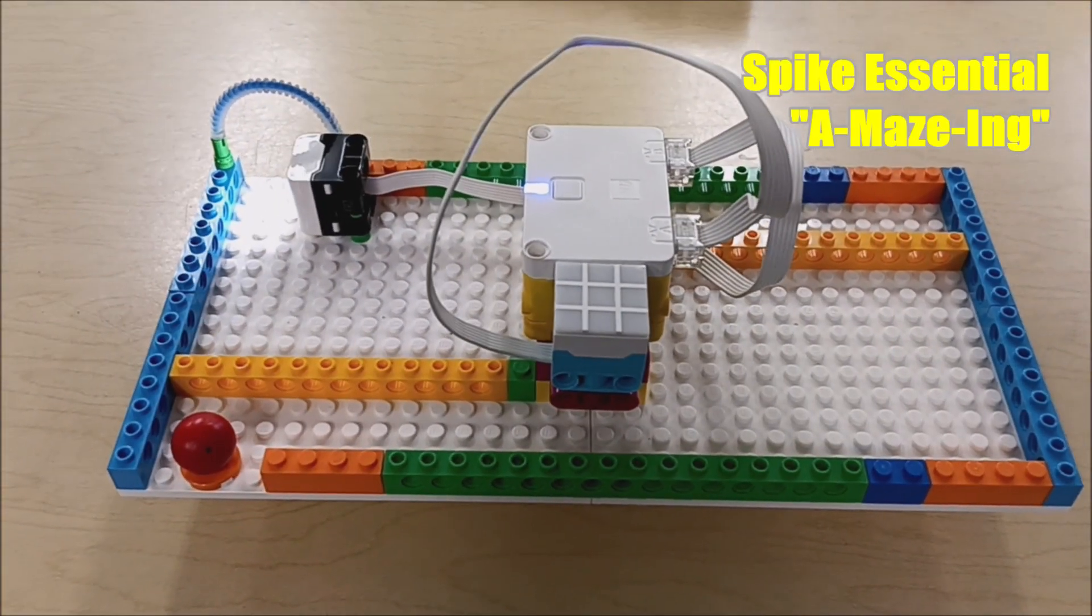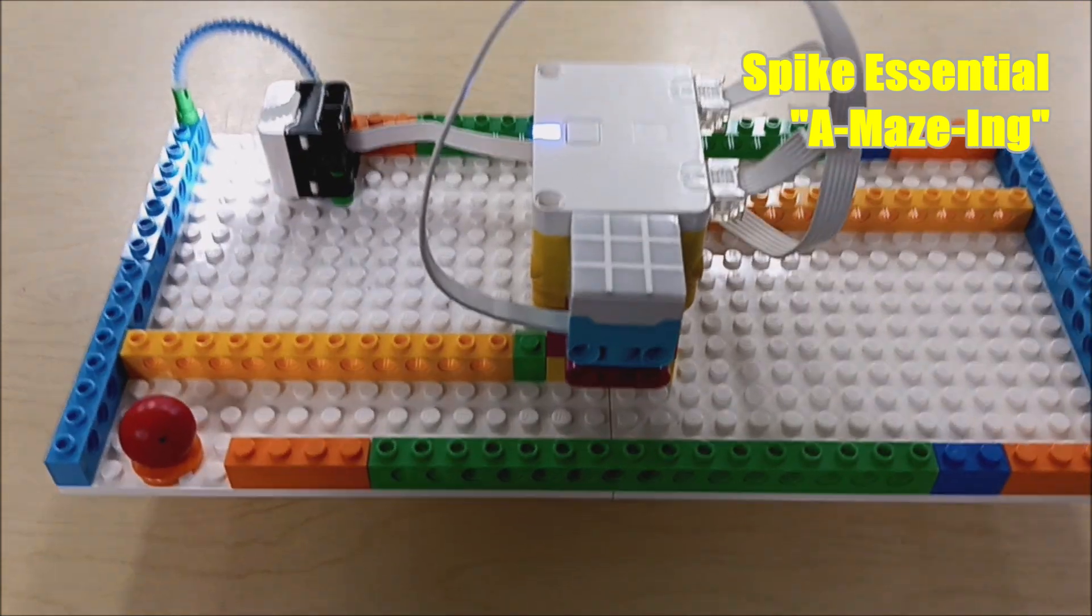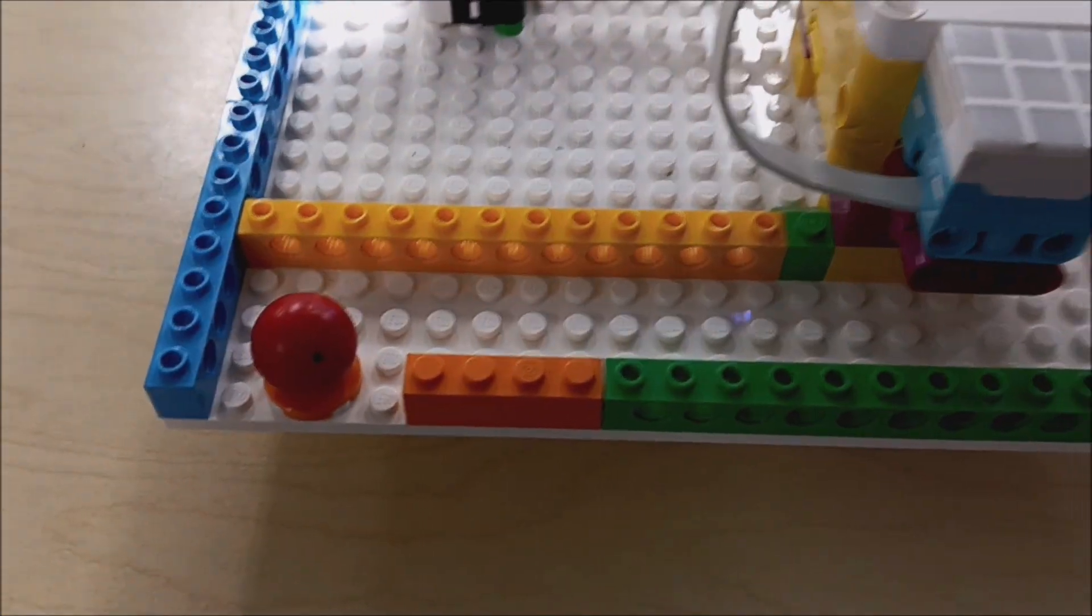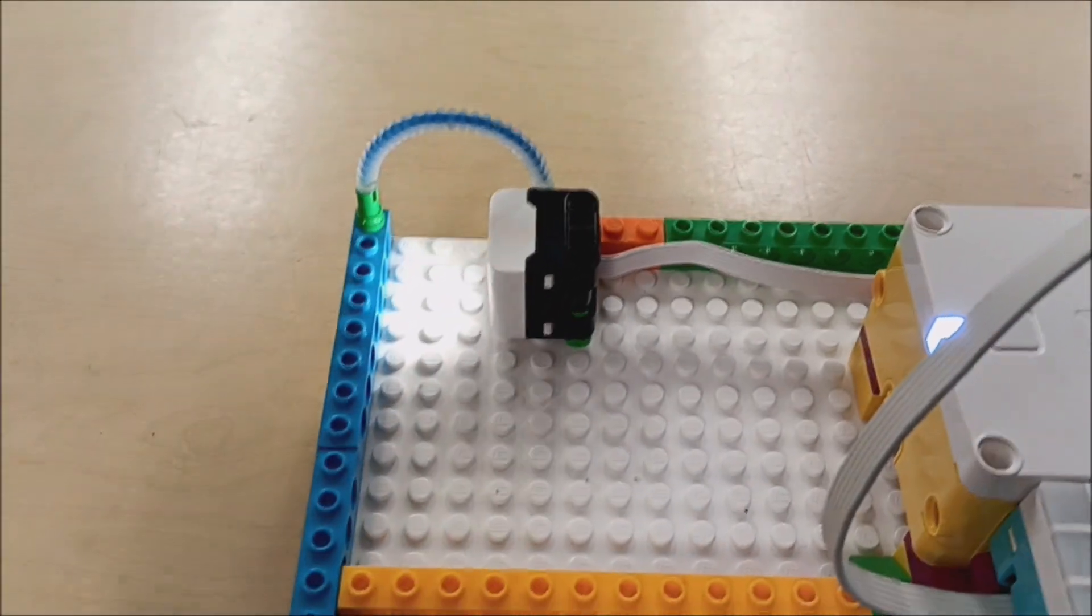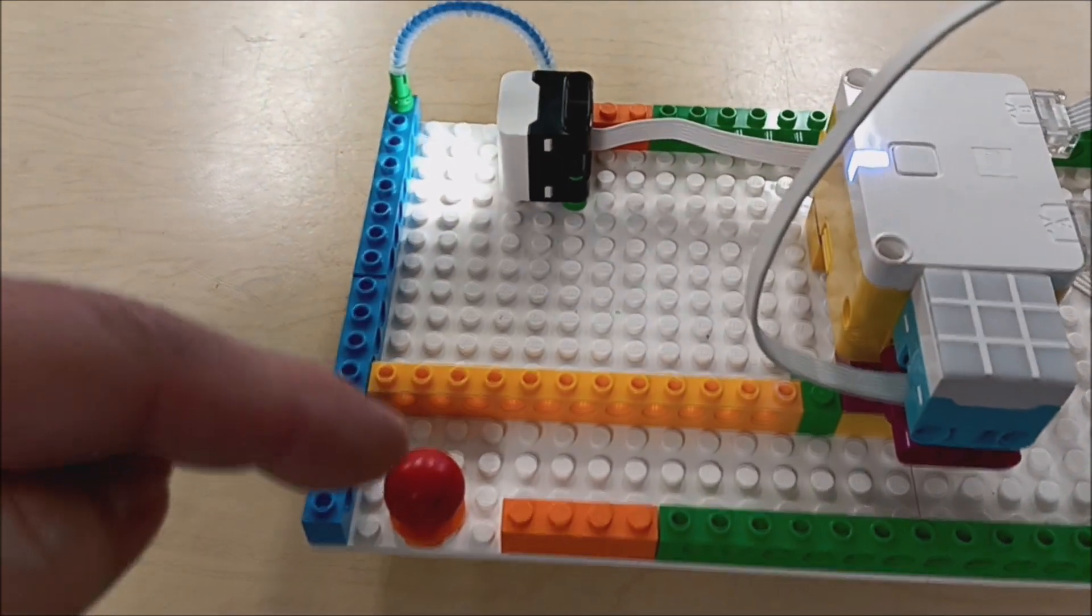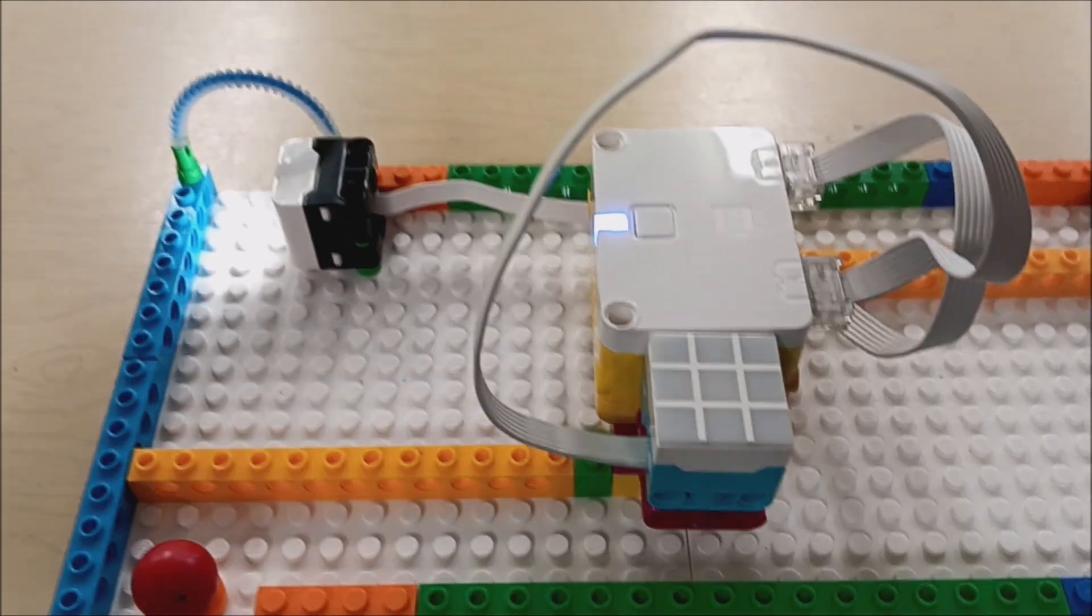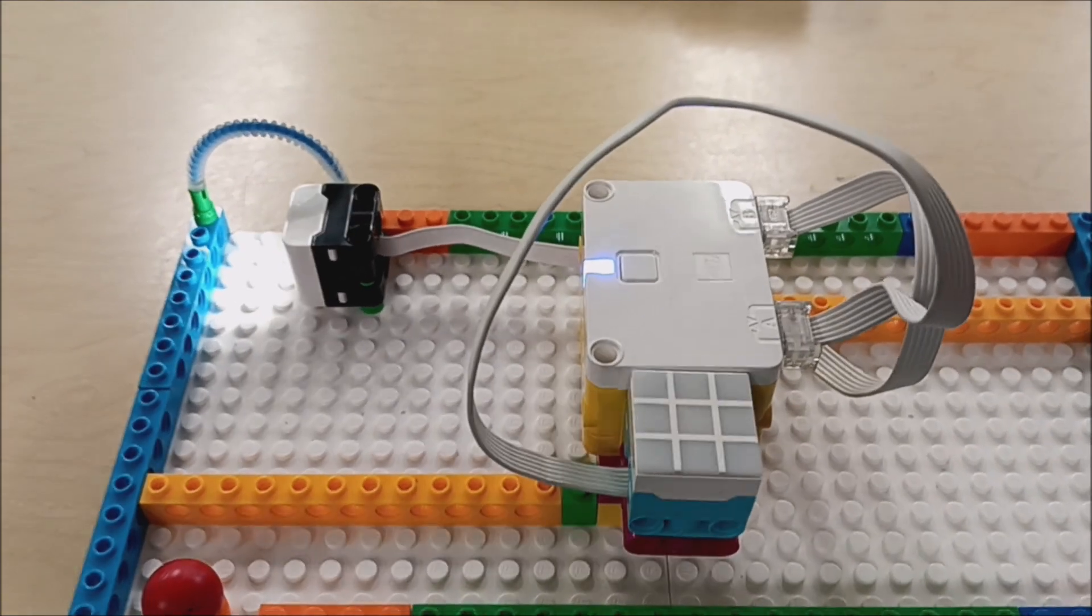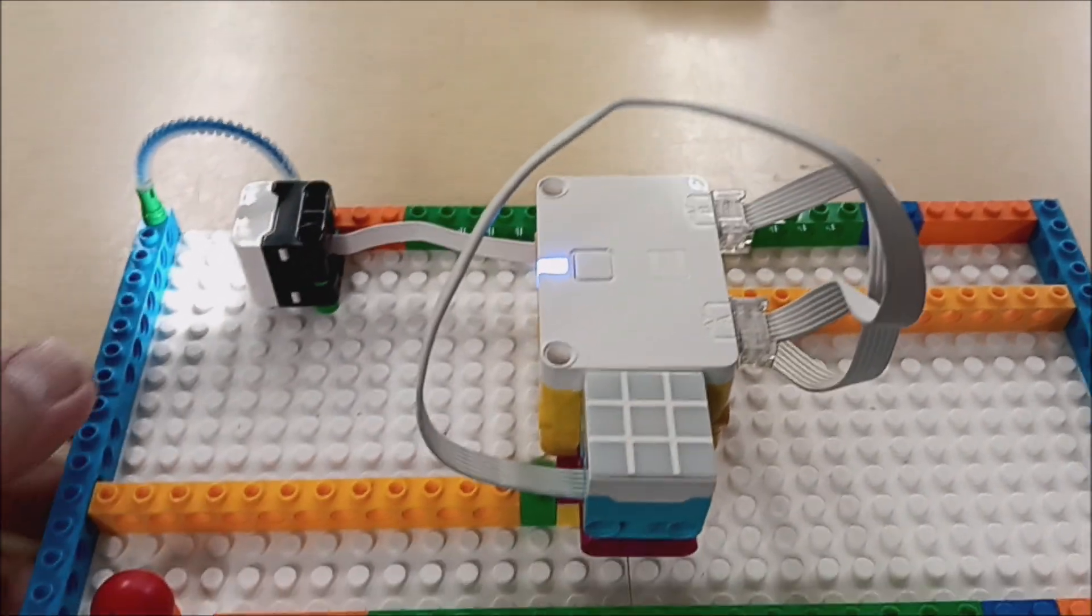Okay, so here is the Spike Essential Amazing Build. There's no motor involved, so you're just going to have to use your hands to get this ball to go through the maze and out this side. I added in a color sensor so that when it sees the red of this ball, it's going to turn on the light matrix and it's going to play a sound that I put on the program. So I'm going to show you that program in a second, but let's just go ahead and take a look on how this works.